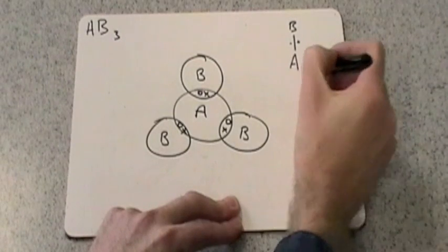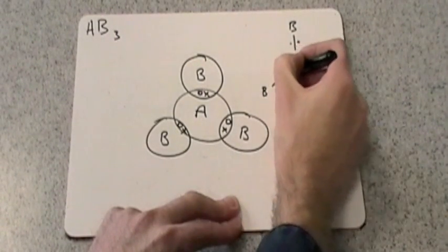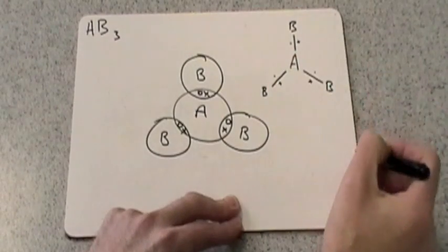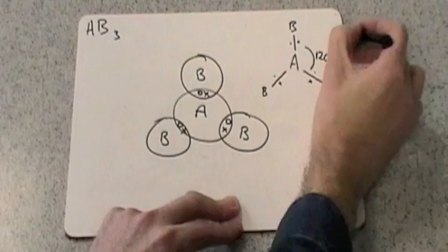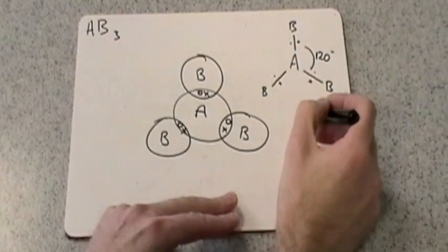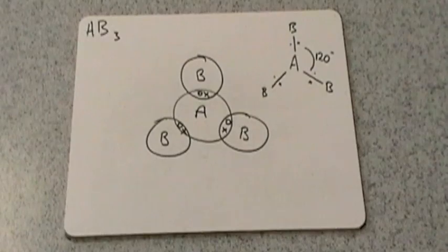There's another B, there's a covalent bond. And there's the other B. I'm trying my best to get the angle to look like 120 degrees. So all of those angles are 120 degrees. And that is what the shape would look like.